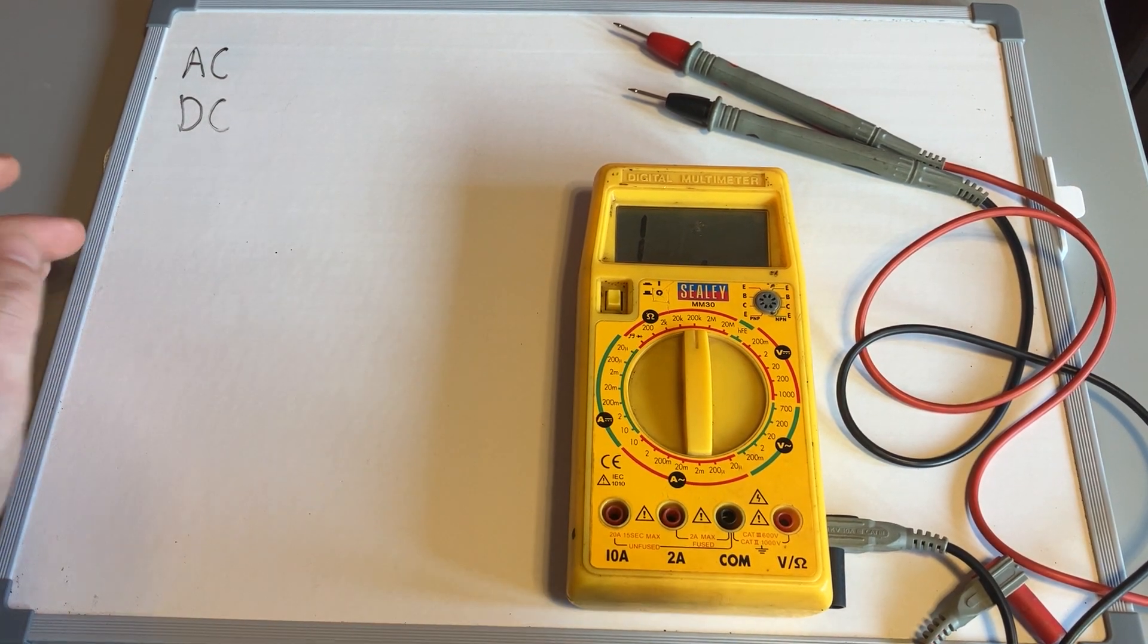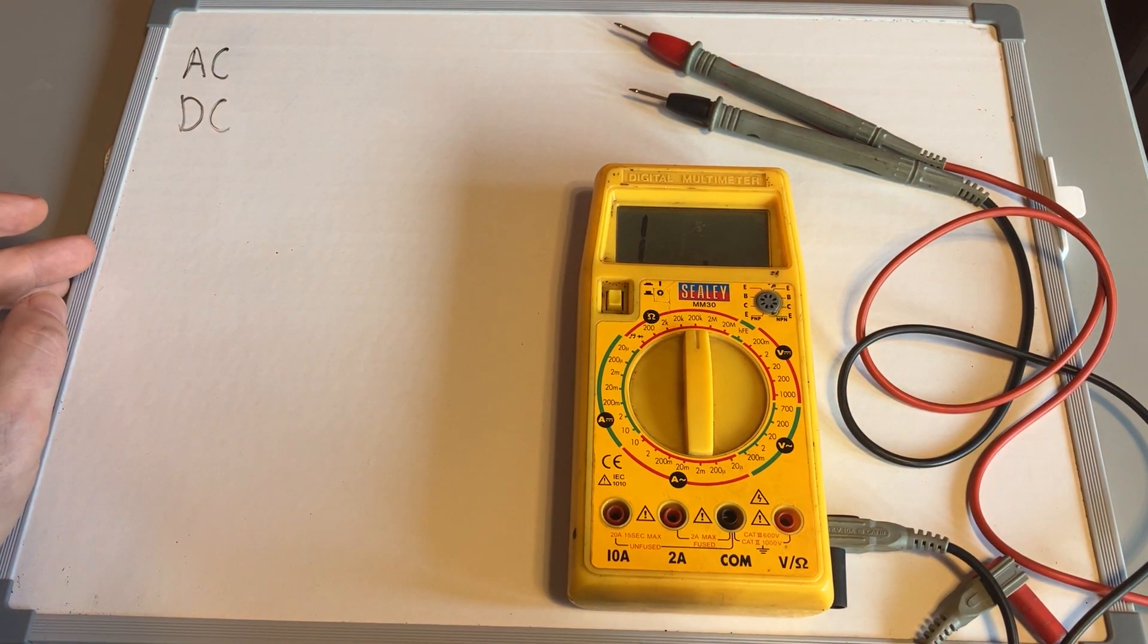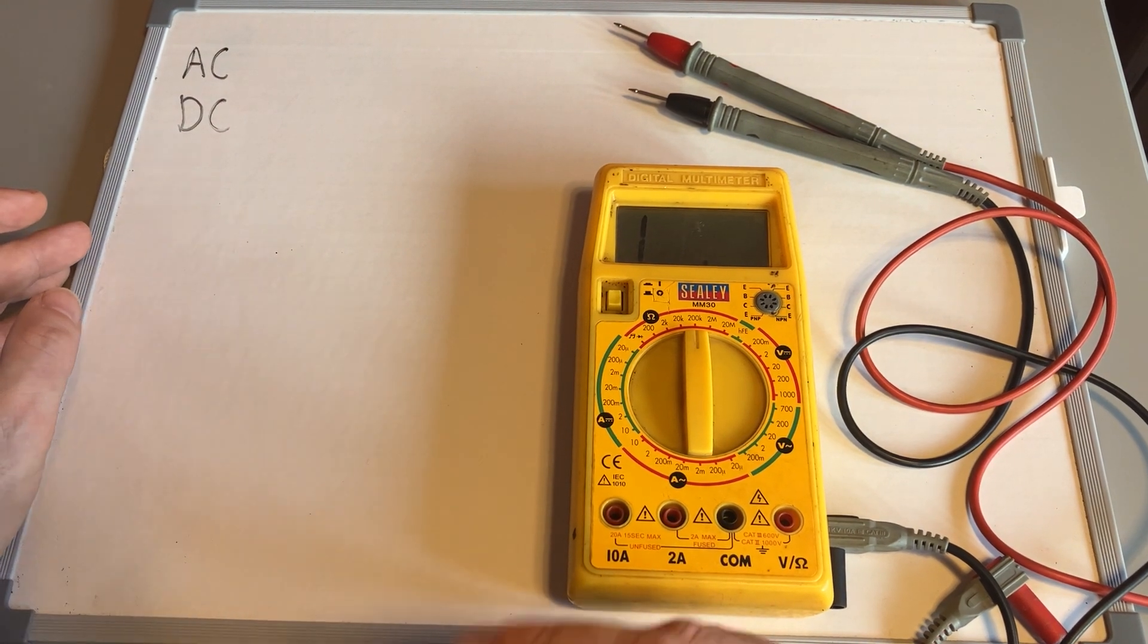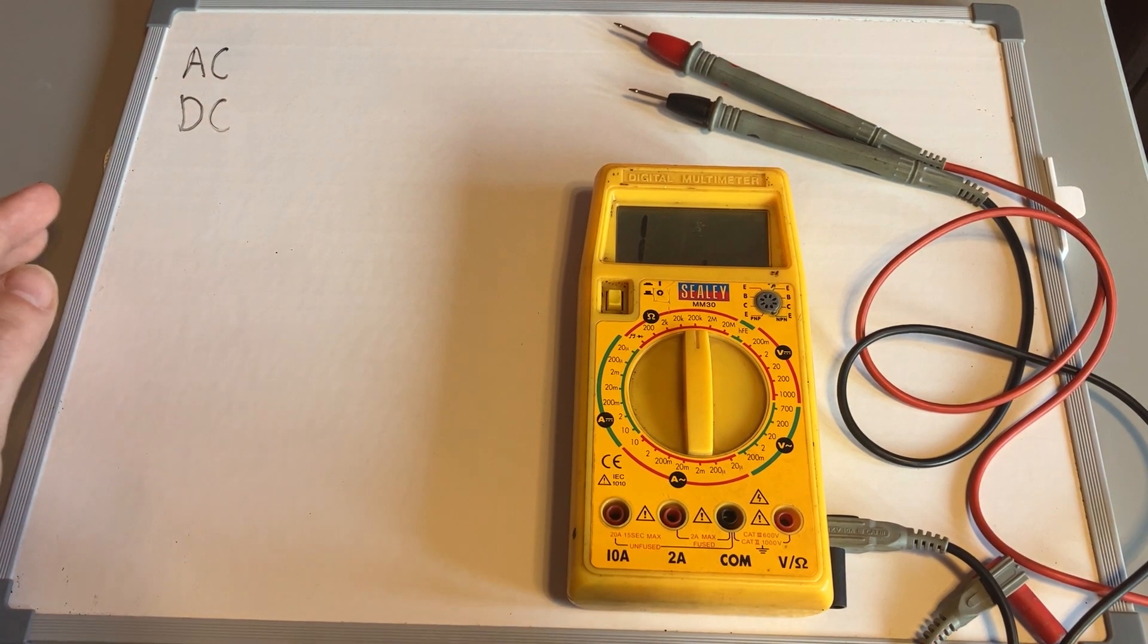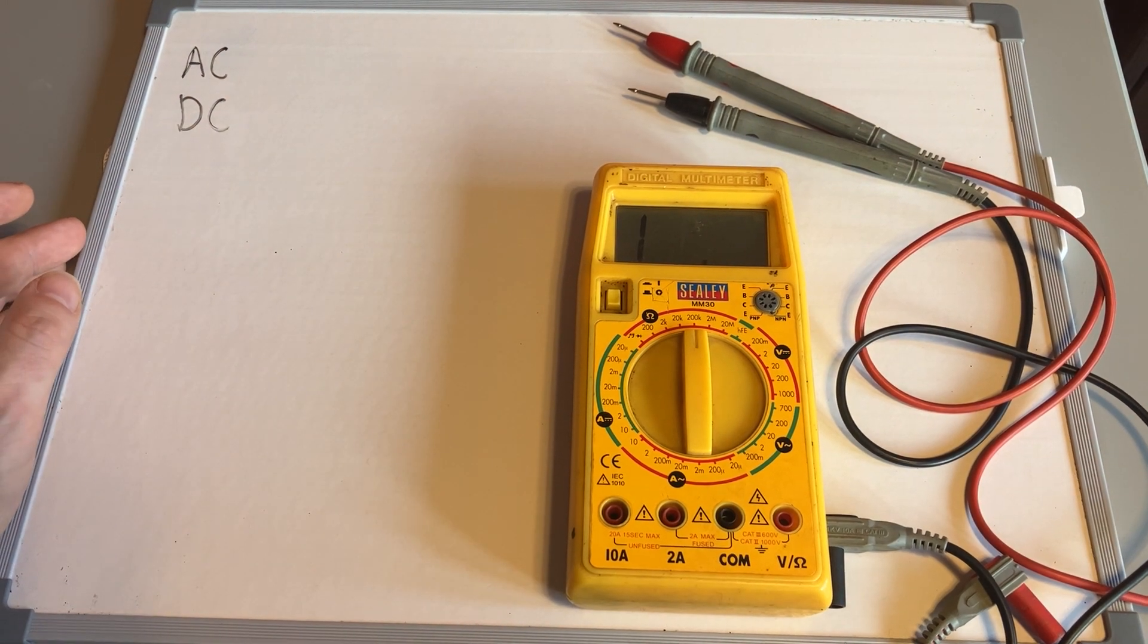There are some alternating current sensors on a car, but the vast majority of your tests would be DC. Obviously some electric and hybrid cars do have AC sections in them as well, but 99% of the tests you're going to do on a normal internal combustion engine car will be DC.